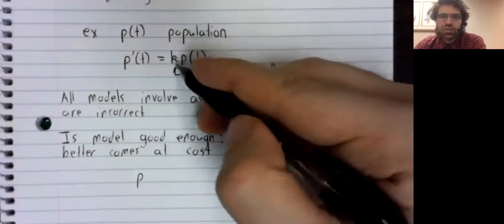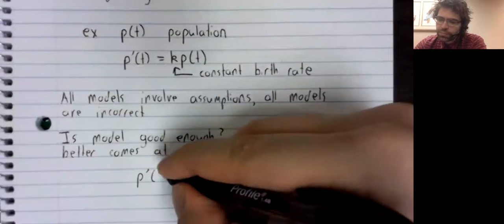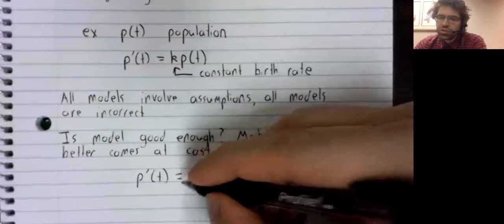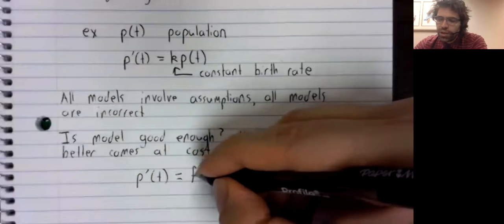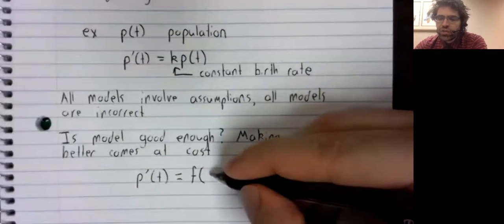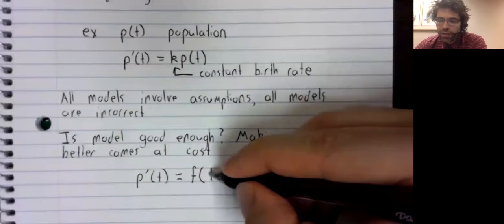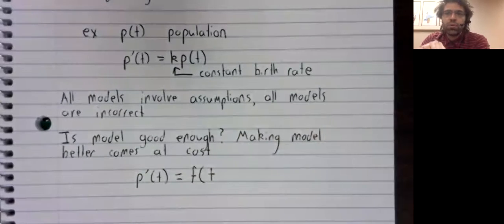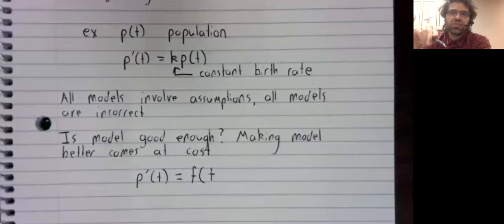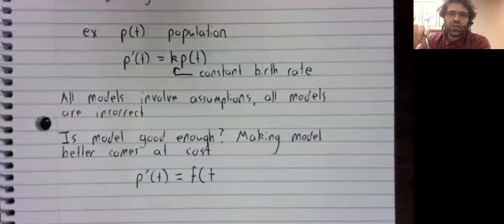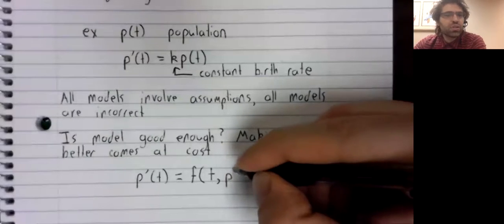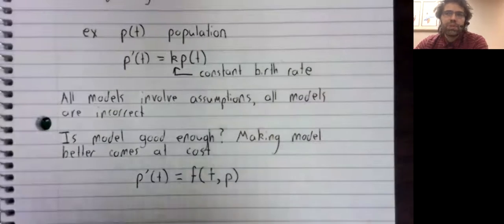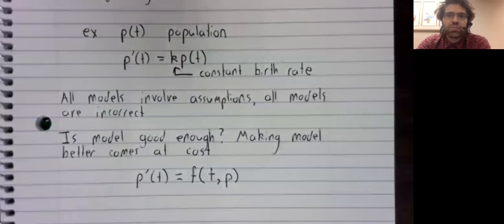Let's make this model better. Instead of having a constant birth rate, we'll let the birth rate change. The birth rate can change based on time. Maybe for example, the birth rate oscillates as the seasons change. And will the birth rate depend on the current population as well? Because it's frequently true that as populations grow, their birth rates shrink.